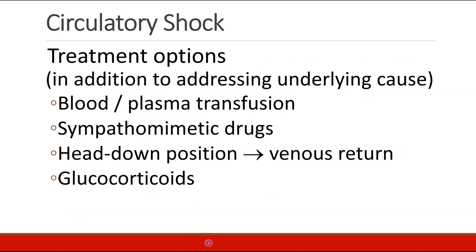How do we treat circulatory shock? We need to determine the underlying cause and treat that. In addition, patients may need blood or plasma transfusion, and sympathomimetic drugs to maintain systemic vascular resistance, blood pressure, heart rate, and contractility. The head-down position may be helpful to increase venous return to the heart. And glucocorticoids may play an important role as well.